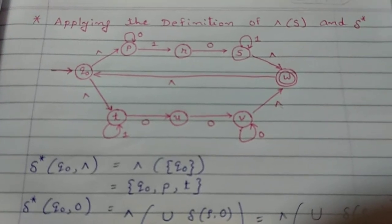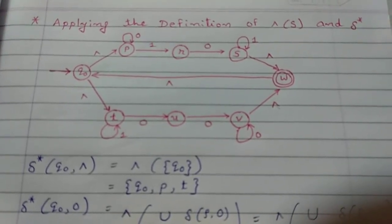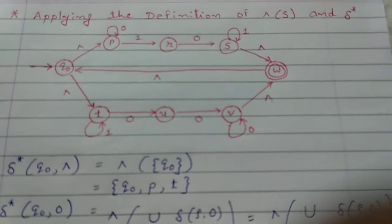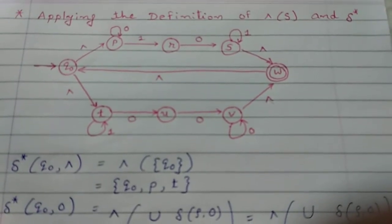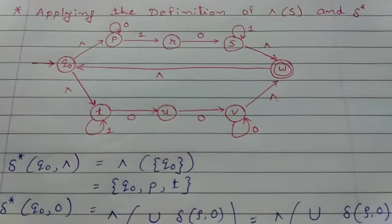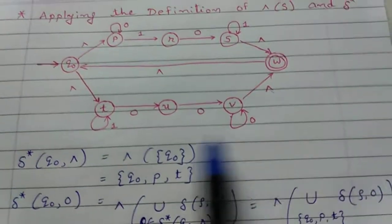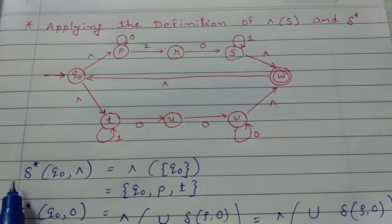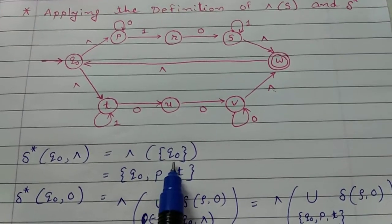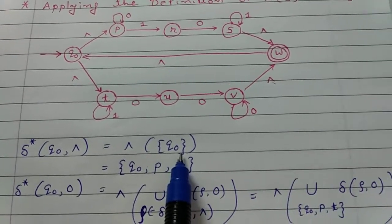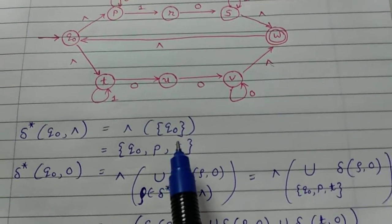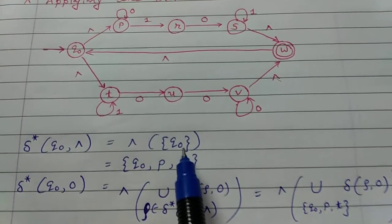Hello friends, today I discuss the recursive definition of delta star for an NFA epsilon example. Applying the definition of epsilon closure of S and delta star to the following figure. Delta star of Q0 with epsilon is equal to epsilon closure of Q0, according to the recursive definition of delta star which we already discussed in the previous lecture. So find epsilon closure of Q0.